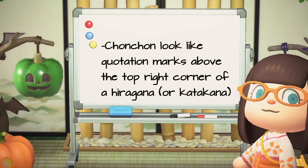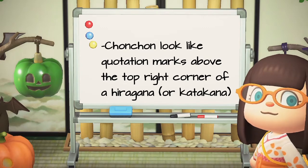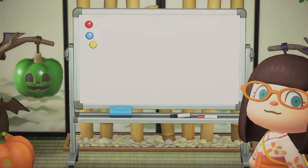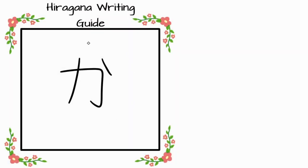The chonchon looks like quotation marks hovering above the top right corner of the hiragana. Let's see how this looks for hiragana ka through ko. Here is hiragana ka — when you write the chonchon, it will be on the top right corner like this. It's kind of like an equal sign at an angle, and it should be straight and not curved. For hiragana ka, you already have one stroke on the top right that comes with the original writing. When you add the chonchon, make sure it is shorter than the third stroke for hiragana ka, so it'll look like three marks on top, but the original stroke should be longer than the other two.